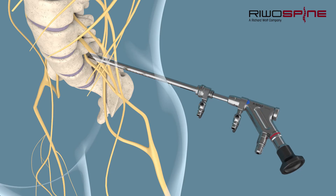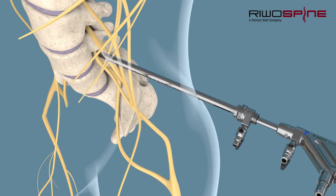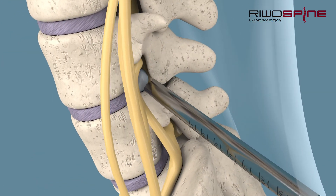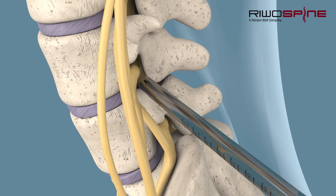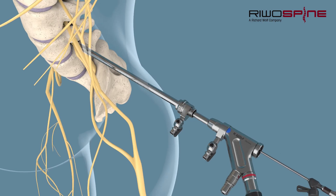An essential component is the endoscope, which guarantees optical control of the treatment at all times. This allows the procedure to be performed safely and least invasively. The herniated intervertebral disc tissue is carefully extracted with the help of forceps to perform a decompression of the nerve structures.